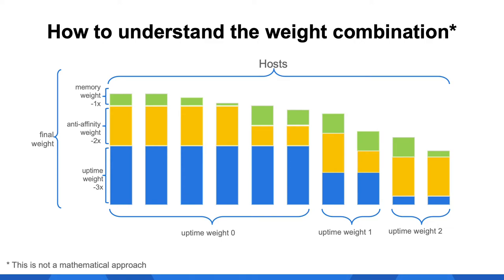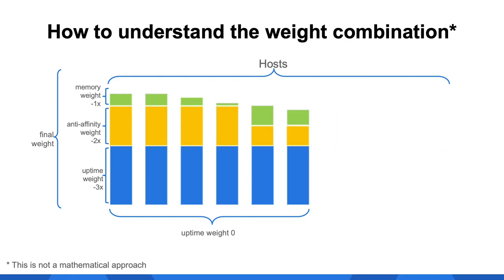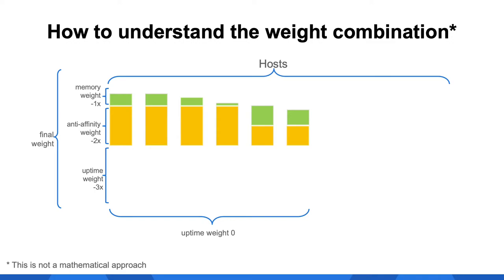This slide explains why we choose multipliers of 1, 2, or 3 for the weights. All weights have their values normalized between 0 and 1. Focus on the hosts with uptime weight 0 — because the uptime weight is multiplied by 3, the winning host is in this group. But within the group with uptime weight 0, uptime is no longer relevant since all hosts have the same weight. The same idea applies to anti-affinity: few hosts have more than 4 VMs of the same project running. So the memory multiplier makes the final decision in the last subgroup.